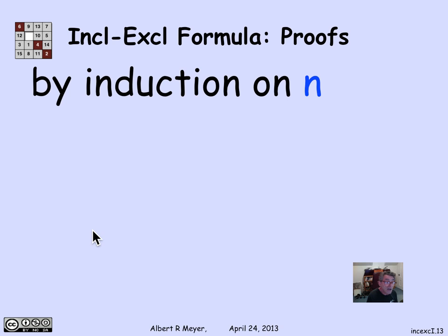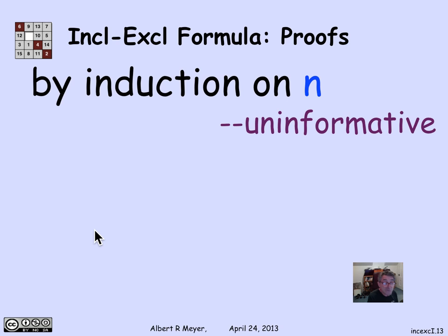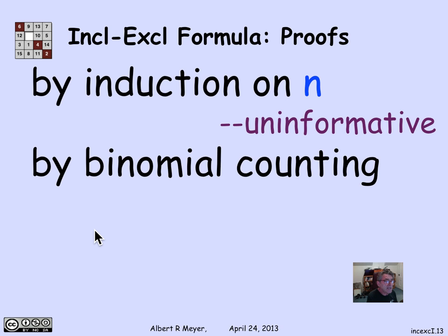How do we prove this? There are several approaches. The simplest is by induction: use the two-set version of inclusion-exclusion and go from the union of the first n sets, applying the formula and simplifying. This works fine but isn't very informative. A second approach uses the binomial theorem and counting — making rigorous the argument about how many times points in various intersections are counted — which will be done in a subsequent segment.